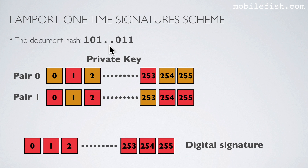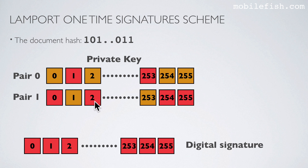This is Alice's document hash, and this is the private key she generated. She loops through each bit of the hash. Bit number 0 has value 1 — she looks at pair 1 and selects that random number. Bit number 1 has value 0 — she looks at pair 0 and takes that value. Bit number 2 has value 1 — she looks at pair 1 and selects that random number. Bit number 253 has value 0 — she looks at pair 0 and takes that random number. And so on. The selected random numbers form the digital signature.